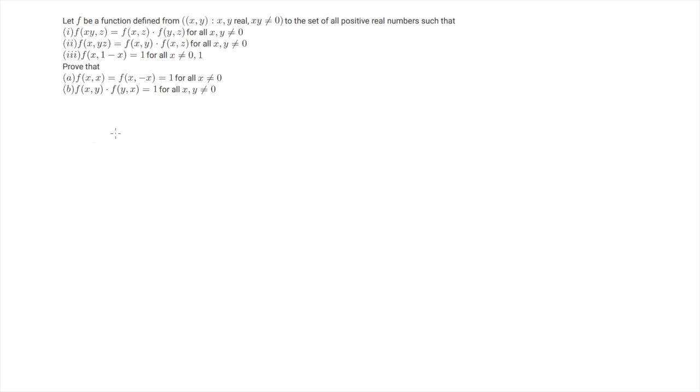So the first thing we would like to try is to take some special value. And since the conditions are on the product, it's natural to take the value 1. So if I take x equals 1 in the first identity, I have f of 1, z times f of y, z equals f of y, z. And since f is positive, this implies that f of 1, z equals 1 for any z. So if I apply the same thing on the second condition, we get f of x, 1 equals 1 for any x.